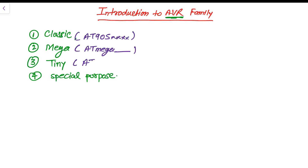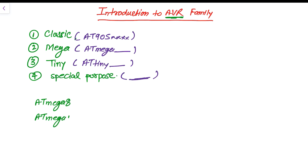The ATtiny series of microcontrollers starts with ATtiny followed by a number representing the availability of ROM, RAM, and GPIO pins. The fourth type — Special Purpose — doesn't have a specific naming pattern, but most start with AT followed by a function like USB, PWM, CAN, or other interfaces. In the ATmega series we have many types such as ATmega 8, 16, 32, and 64.